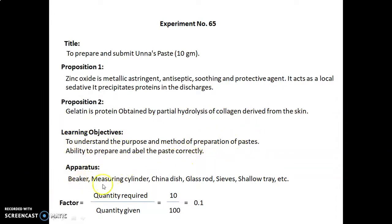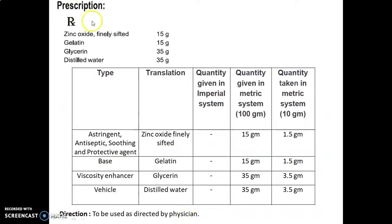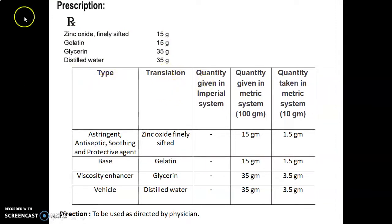Apparatus required includes beaker, measuring cylinder, china dish, glass rods, sieves, shallow tray, etc. The factor is calculated as quantity required upon quantity given, which equals 10 upon 100, that is 0.1. The prescription is denoted by the symbol Rx. The formulation table lists type, category, role of ingredient, name of ingredient, quantity given in metric system for 100 grams, and quantity taken for 10 grams.